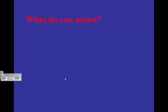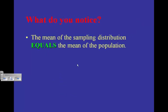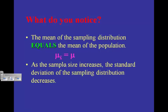The mean of the sampling distribution is going to equal the mean of the population. Write down this formula: μ sub x-bar equals μ. As sample size increases, the standard deviation of the sampling distribution decreases — the bigger the sample size, the smaller the standard deviation. As n goes up, the standard deviation of the sampling distribution goes down.